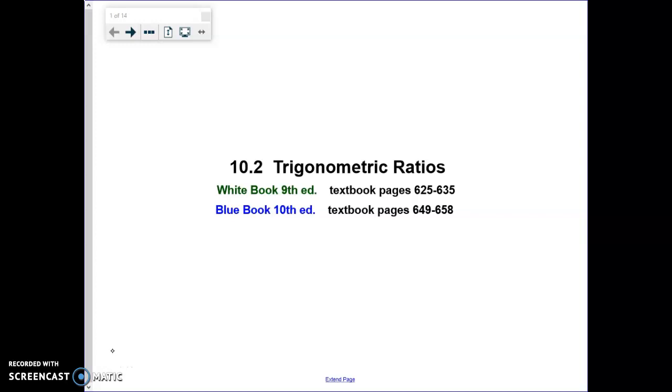Alright ladies and gentlemen, we just got done looking at special types of right triangles. Your 30, 60, 90, your 45, 45, 90, also your 3, 4, 5.